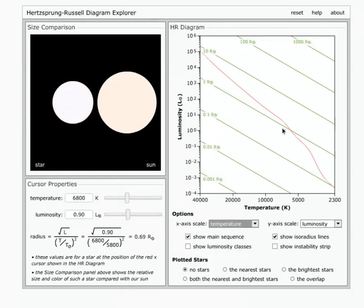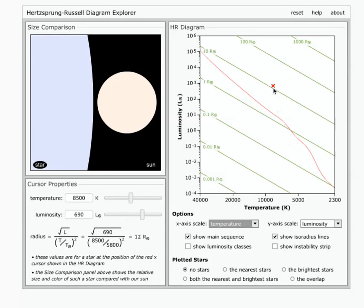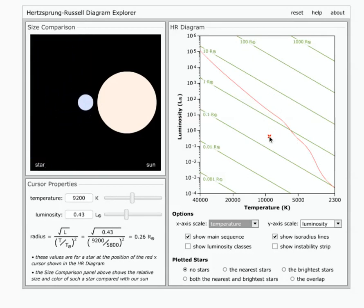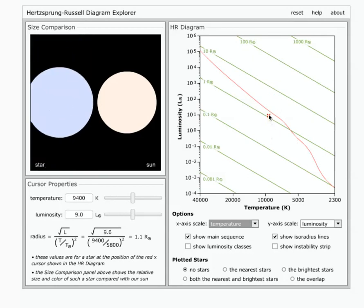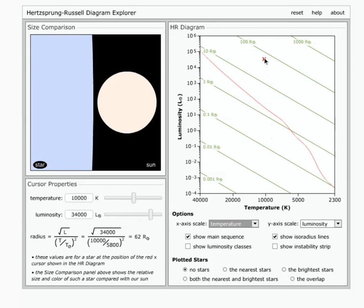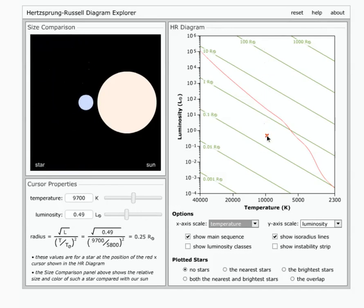The vertical scale, I can move this thing up and down, the star's location on the HR diagram, what I'm changing is the luminosity of the star. If I go higher and higher, I'm getting brighter and brighter, and if I go down, I'm getting fainter and fainter.